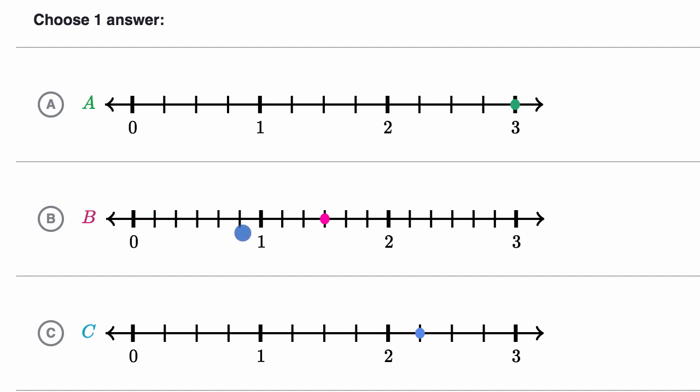Let's see, choice B. Let's see, what is, let's see, we have divided the space between 0 and 1 into 1, 2, 3, 4, 5, 6 equal spaces. So each of these are a sixth.